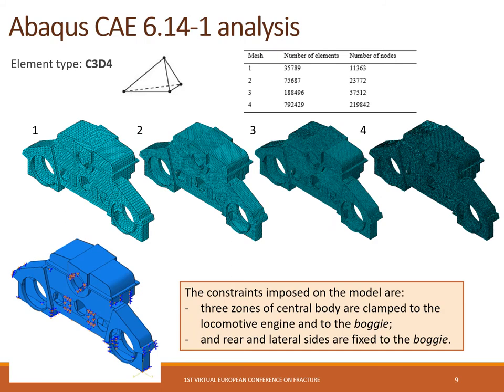For the finite element analysis, the element type considered was C3D4, a three-dimensional solid element. Four meshes were considered with different numbers of elements and nodes. The constraint model includes three zones of the central body: one zone clamped to the locomotive engine and two zones clamped to the bogie. The rear and lateral sides are also fixed to the bogie.